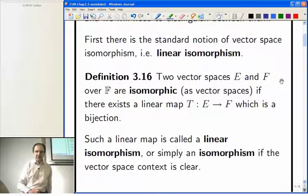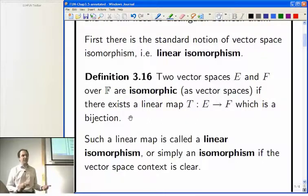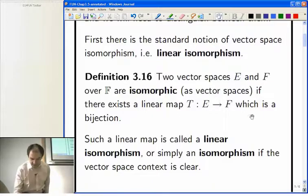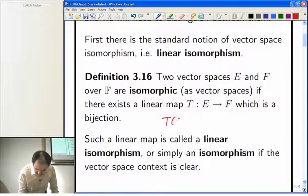So, your vector spaces are isomorphic if you can find a bijective linear map between them. And of course, that means it's one-to-one and onto. And so that means T of E has to equal F, and T has to be 1-1.